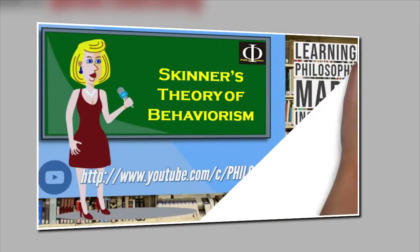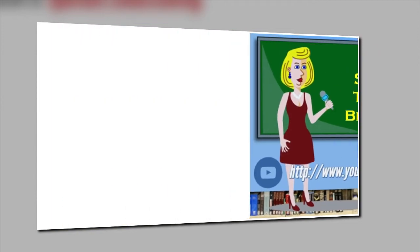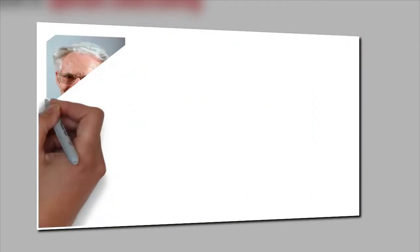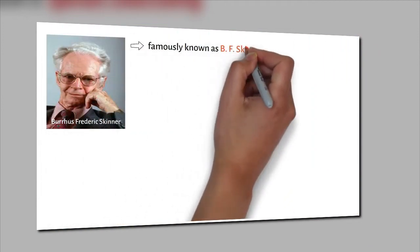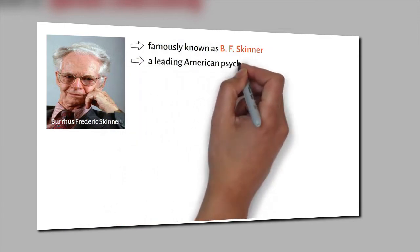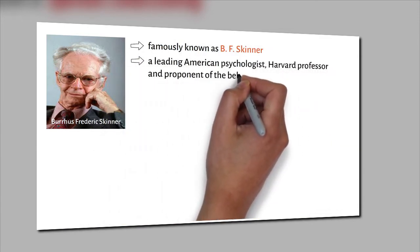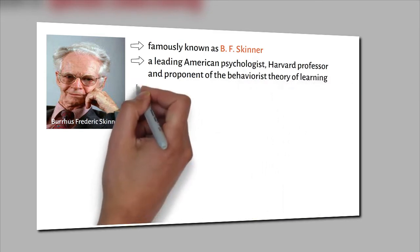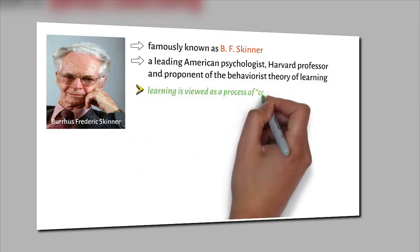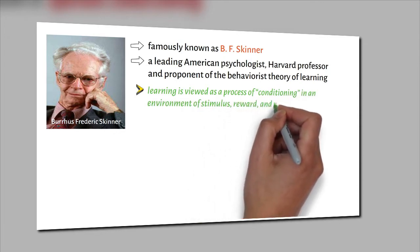Skinner's Theory of Behaviourism. Burrhus Frederick Skinner, famously known as B.F. Skinner, was a leading American psychologist, Harvard professor, and proponent of the behaviourist theory of learning, in which learning is viewed as a process of conditioning in an environment of stimulus, reward, and punishment.